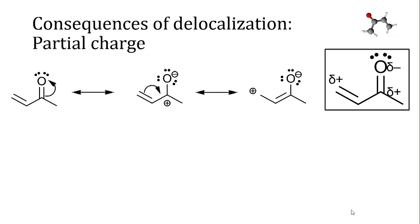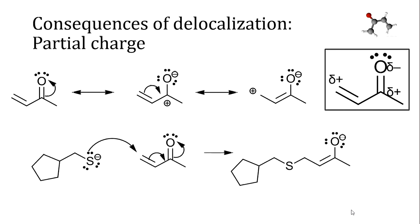In the case of methyl vinyl ketone, these partial charges help us understand the particular types of reactions it can undergo. Later on, you're going to study the reactions of carbonyl compounds like ketones, and learn that they react with things that have negative charges to form new sigma bonds. But methyl vinyl ketone can also do that at the alkene carbon that has a partial positive charge, and that makes it unique amongst ketones. We can use the information about these partial charges to help understand the outcome of a reaction. The arrows in a reaction mechanism are attempting to represent the same thing as resonance arrows, and you can see arrows in this mechanism that look a lot like resonance arrows.